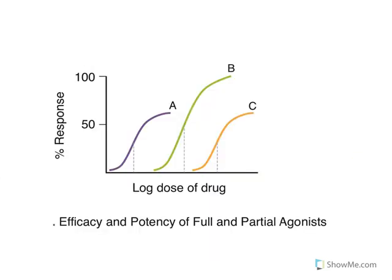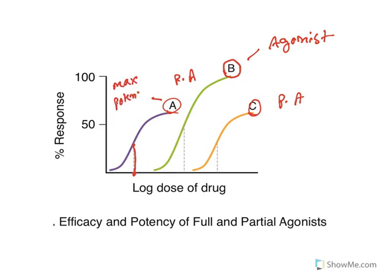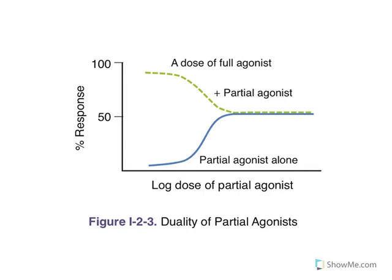Look at this: three drugs are shown. The drug showing maximal response is a full agonist. Drugs not showing maximum effect are partial agonists. Among the partial agonists, Drug A has its EC50 at the lowest concentration — it has the greatest potency, meaning at lower doses it shows its effect. A is more potent than B, and B is more potent than C, since C requires very high doses. The height of the curve represents efficacy; the closeness to the y-axis represents potency.